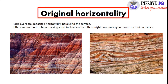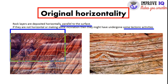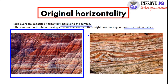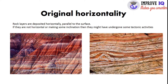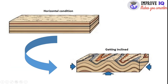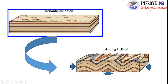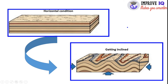The next principle is original horizontality. It states that rock layers are deposited horizontally, being parallel to the surface. If they are not horizontal or are making some inclinations, they have definitely undergone tectonic activities. In original horizontality, both folding and faulting types of tectonic activities take part. The original horizontal condition versus an inclined condition can be clearly seen in pictures.